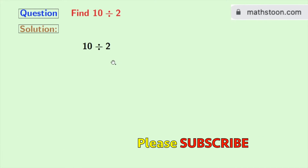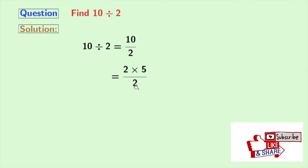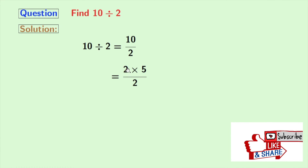10 divided by 2 can be expressed as a fraction 10 by 2. In the numerator, we have 10 and we will express it as 2 times 5. And in the denominator, 2 remains the same. Now look that we have 2 in both the numerator and the denominator.